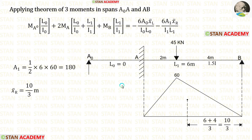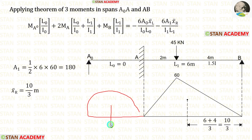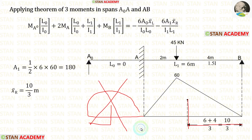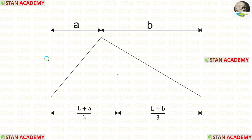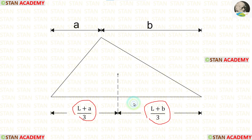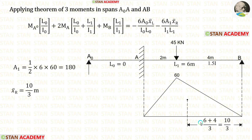Now we have to calculate the centroid distance. For the diagram in span AB, we have to calculate the centroid towards the right side. Since A0A is imaginary, we only calculate for span AB. This is a scalene triangle; the centroid distance towards the right is (L + B) / 3. L is 6 m and B is 4, giving x-bar right = 10/3.